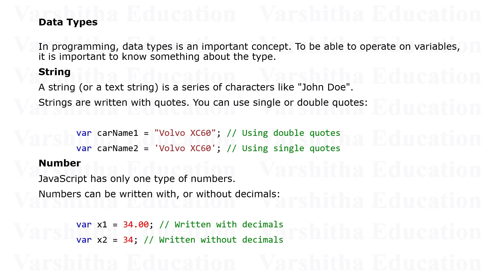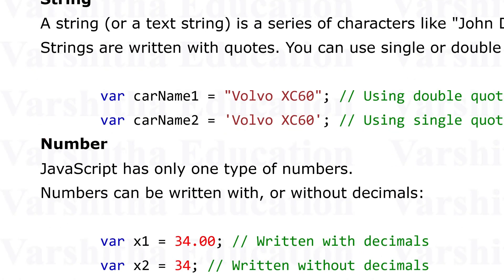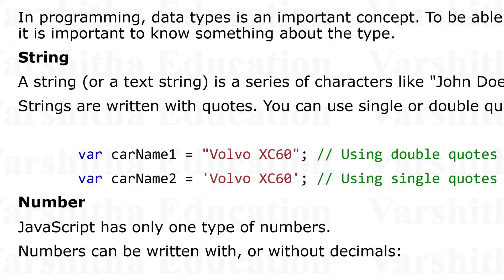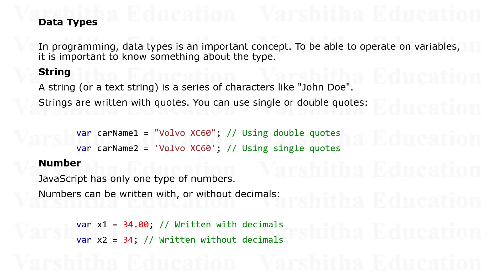The first data type is string. String data types can be used in JavaScript, so the value can be used. The value can be used, so the value can be used.